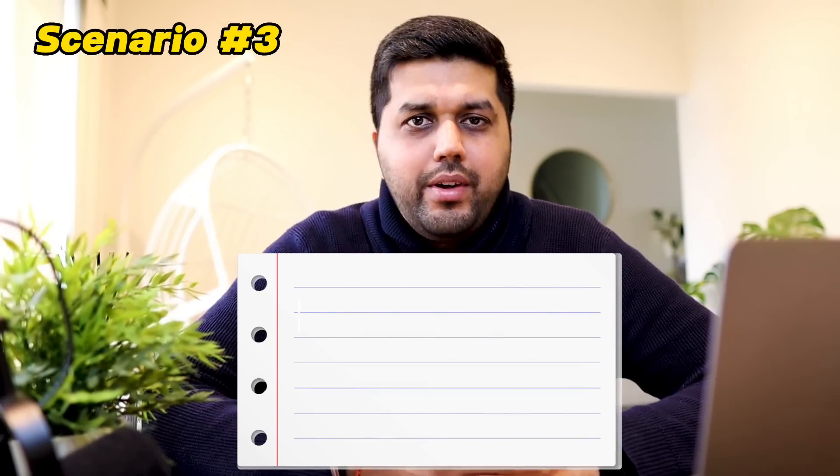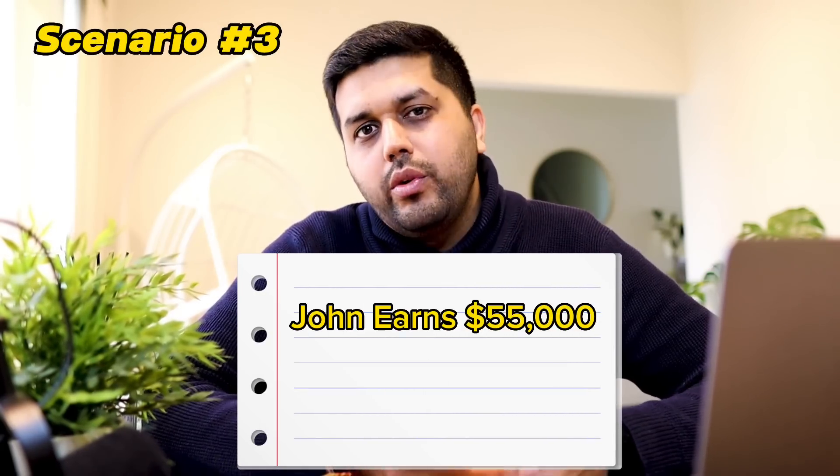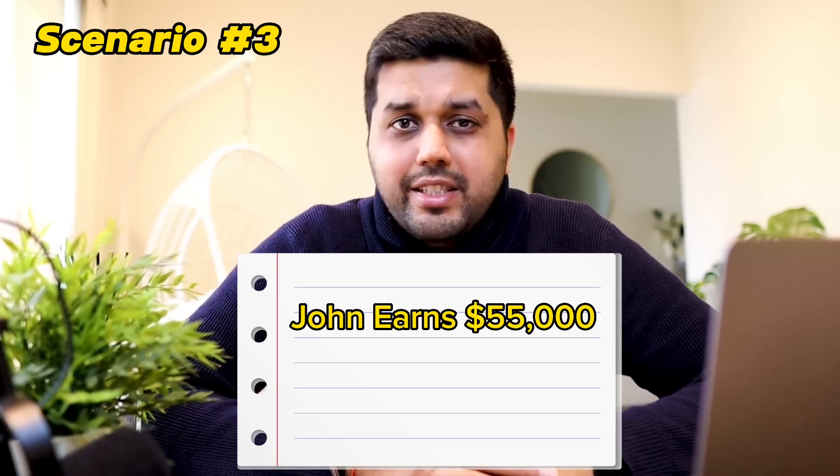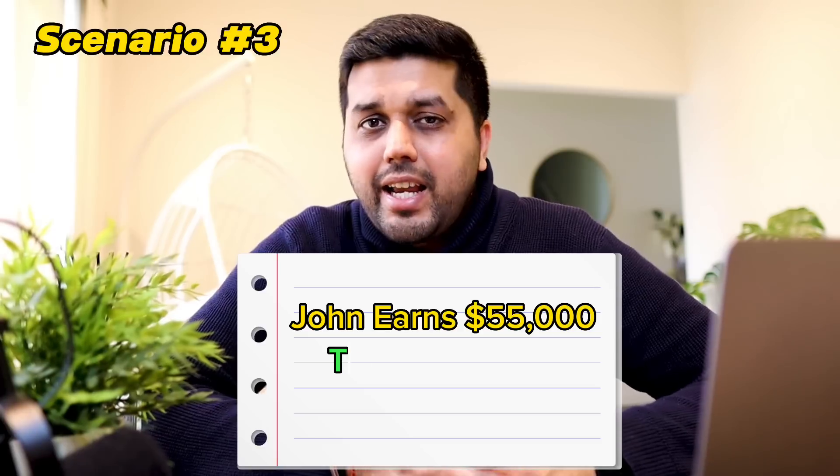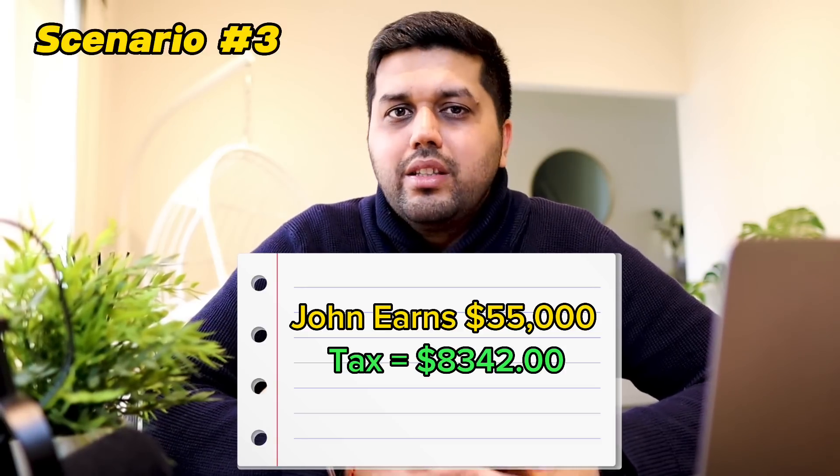Using the same formula, let's look at the third scenario where John is earning $55,000 during a financial year. Using the same tax table, his tax will be around $8,342. Keep in mind that we did not consider any deductions from these numbers, we did not include Medicare levy — since international students don't have to pay it — and we didn't consider any other offsets you might be eligible for. So this is just an estimate to give you an idea of how much taxes you might be paying.